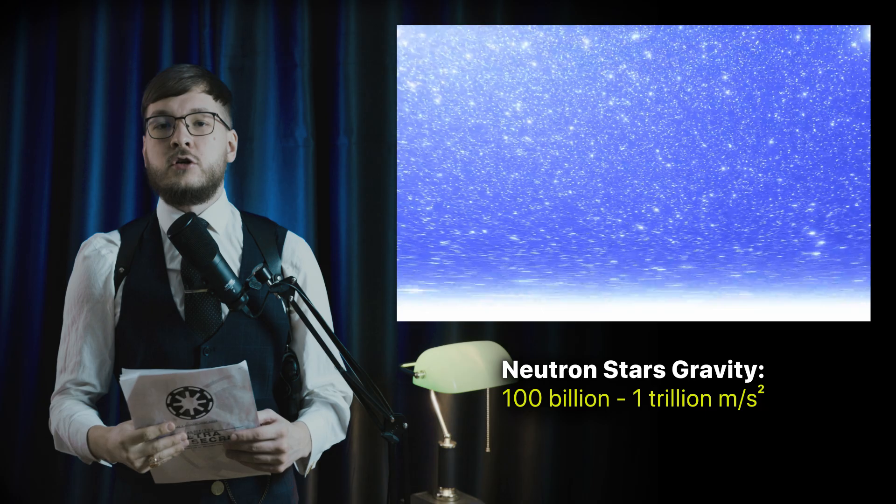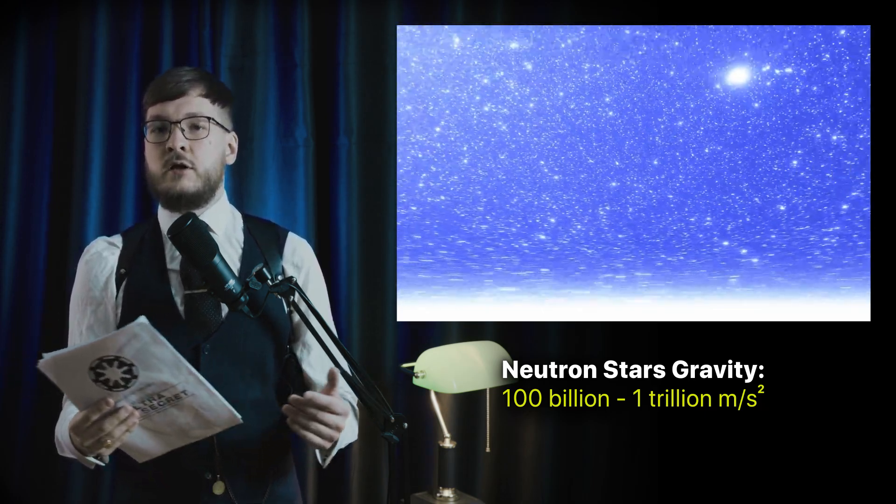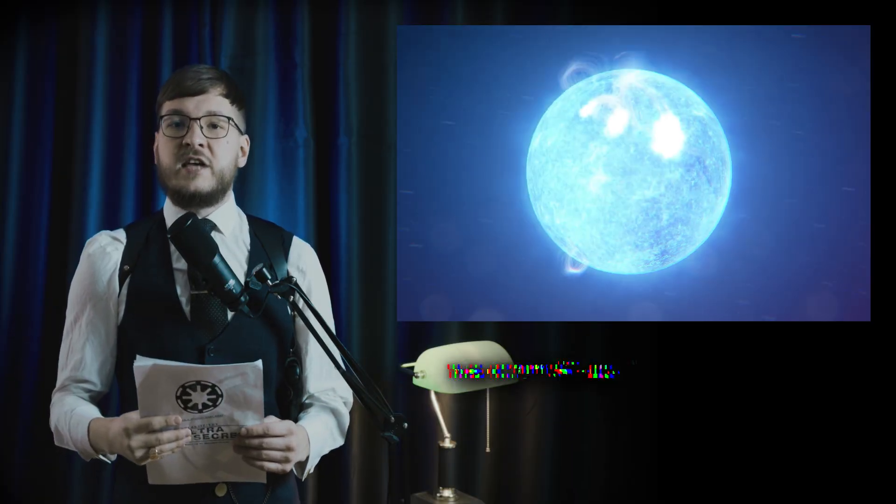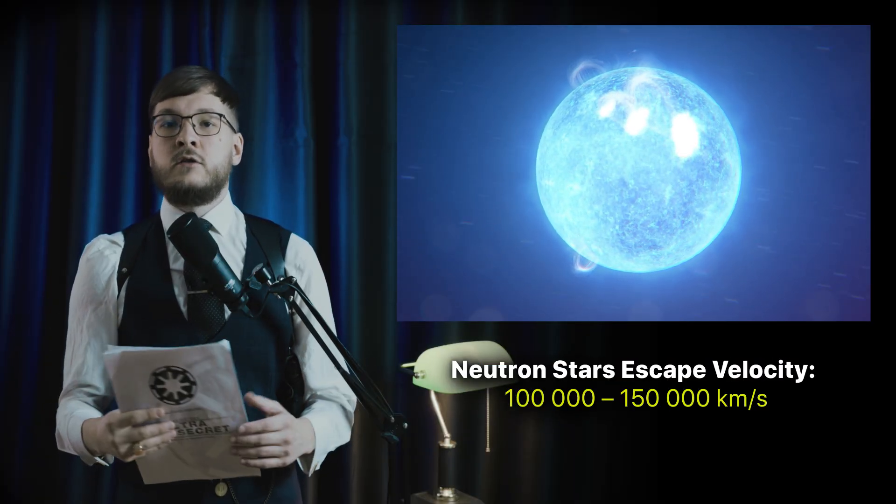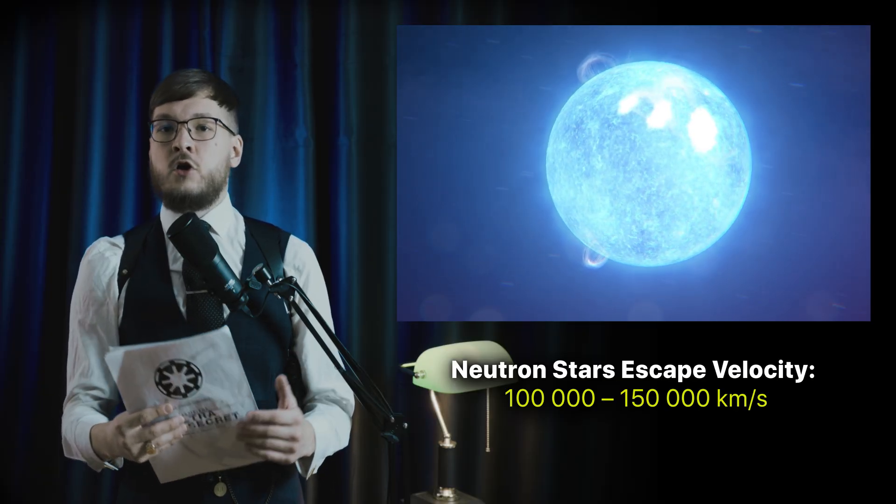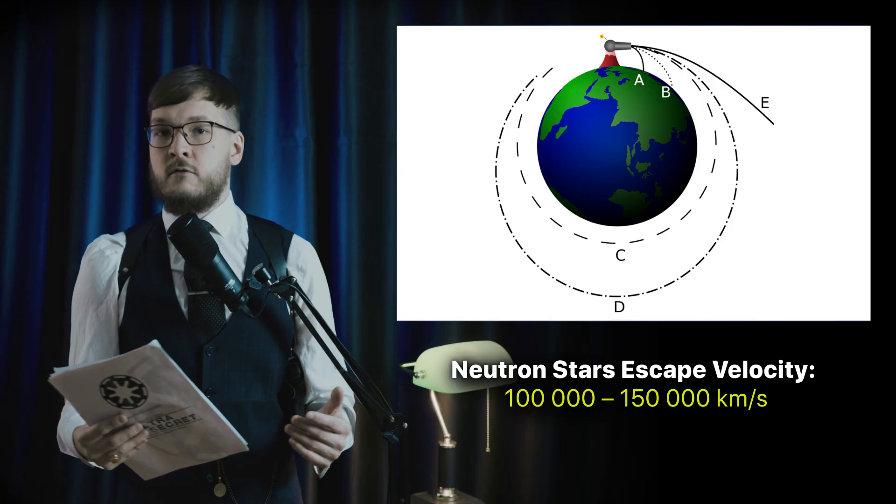The gravitational acceleration is 100 billion g's, that is 100 billion times the acceleration at the earth's surface. The escape speed at the surface of a neutron star is half the speed of light, 150,000 kilometers per second, versus 11 kilometers per second for the earth.